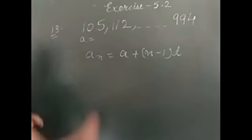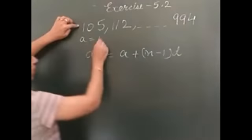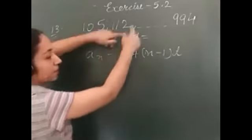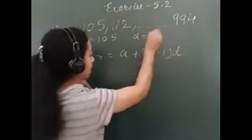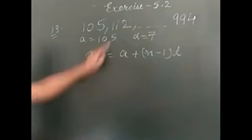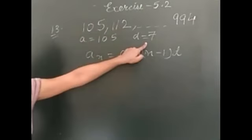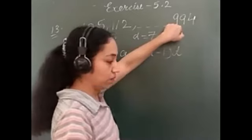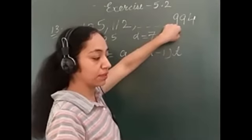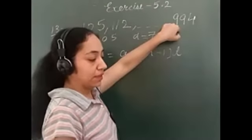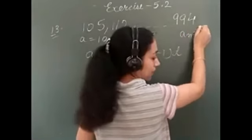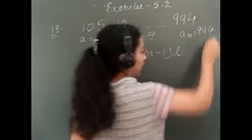And for n's value we are applying the formula: a_n equals a plus n minus 1 multiplied by d. What is a? In this AP, a is 105. And d, the common difference - what are you adding to get the next number? That is 7. Second term minus first term, d will be 7. And what is this 994? What should I assume this as? The last term, which is taken as a_n. So, your a_n becomes 994.